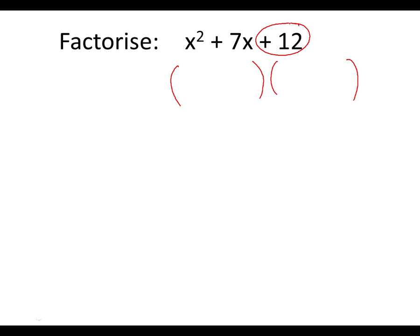And we're going to list some pairs of numbers that times together to make 12. So we could have 1 and 12, we could have 2 and 6, or we could have 3 and 4. So now, because it says 7x, we need to pick some numbers that add together to make 7. So we're going to pick the 3 and the 4. So they are the numbers that go into our brackets.